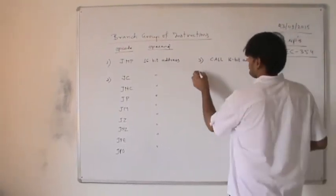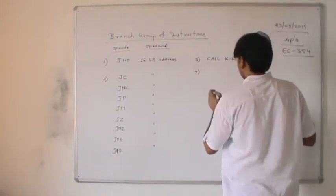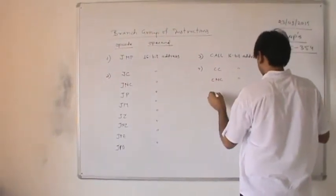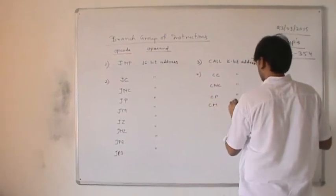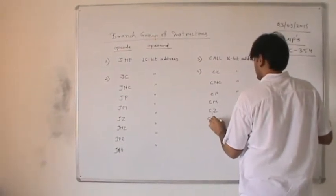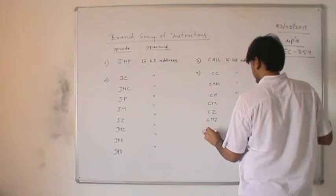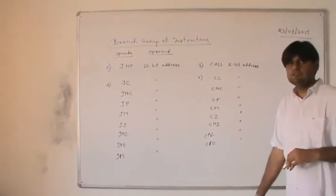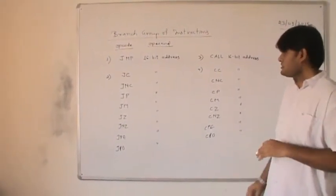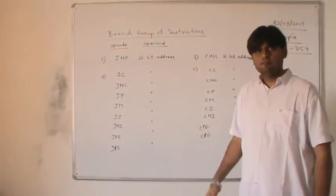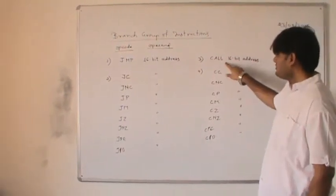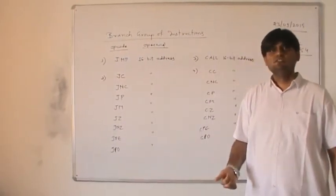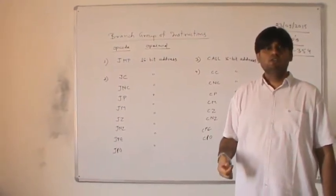We also have conditional call instructions, similar to the jump instructions: CC (call on carry), CNC (call on no carry), CP (call on plus), CM (call on minus), CZ (call on zero), CNZ (call on no zero), CPE (call on parity even), and CPO (call on parity odd). These check the same flags as the jump instructions. In programs, we commonly use CALL in the main program, and JC, JNC, JZ, JNZ are frequently used by programmers to solve problem statements.